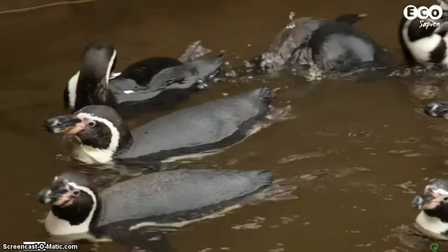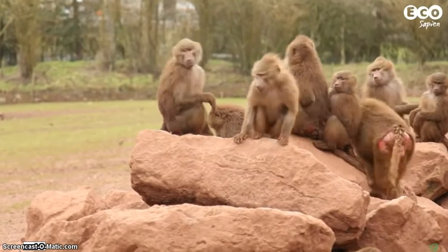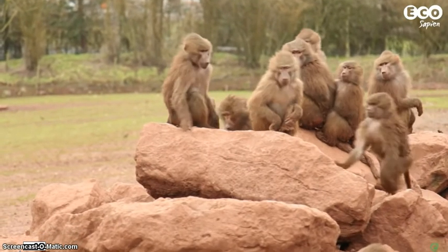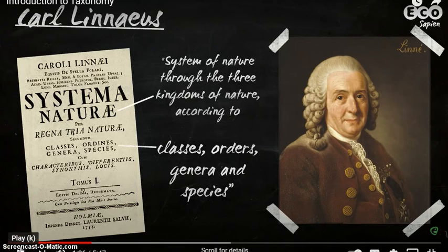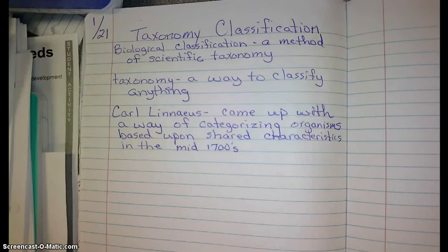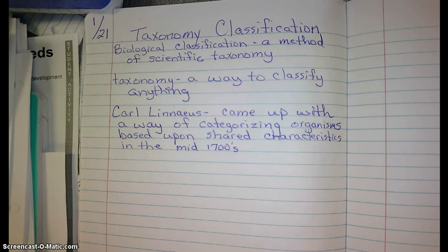Taxonomy is simply a way of putting things into categories. Biological classification is how scientists categorize all living things, from bison to bacteria. The man who came up with it all was Carl Linnaeus, who came up with a system of categorizing the natural world based on shared characteristics. Go ahead and write Carl Linnaeus — he's the one that came up with a way to categorize organisms based on their shared characteristics, in about the mid-1700s.